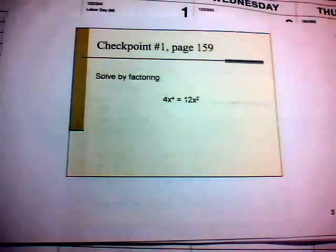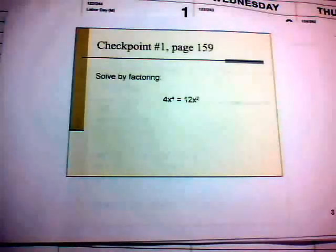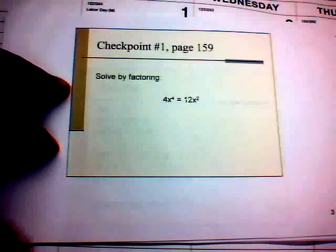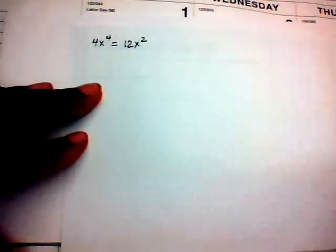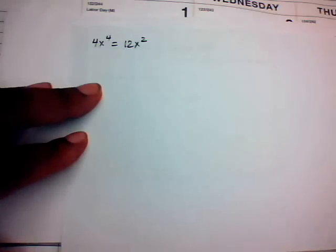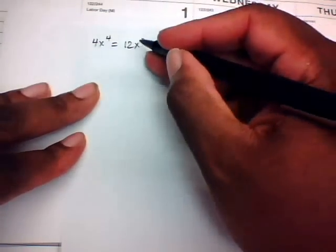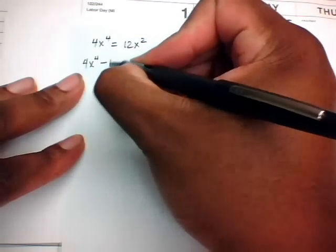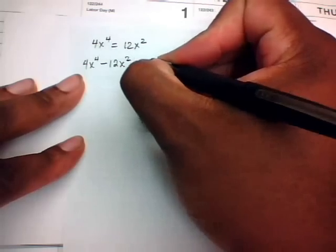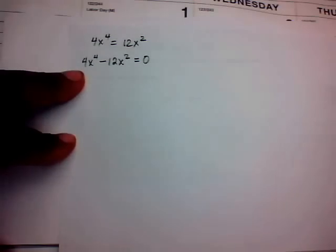Let's look at this first problem: solve 4x⁴ = 12x² by factoring. We want to get zero on one side, so move 12x² to the other side. That gives us 4x⁴ − 12x² = 0.